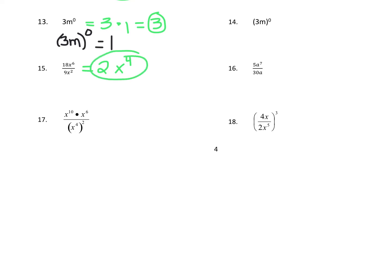And finally, number 17 — there's a little bit going on here. Let's work with the numerator first: we're multiplying two terms with the same base, so we add the exponents. 10 plus 6 is 16, so we get x to the 16th power. On the bottom in the denominator, we have a power being raised to another power, so we multiply those numbers: 4 times 2 is 8, giving us x to the 8th power. Now we're dividing two terms with the same base, so we subtract the exponents: 16 minus 8 is 8. We wind up getting x to the 8th power.